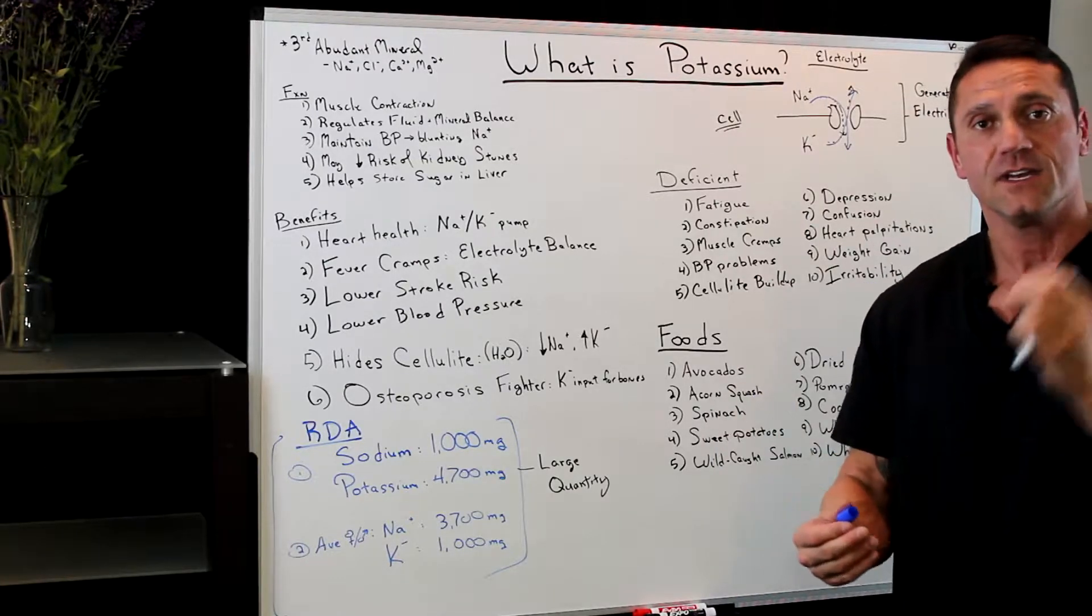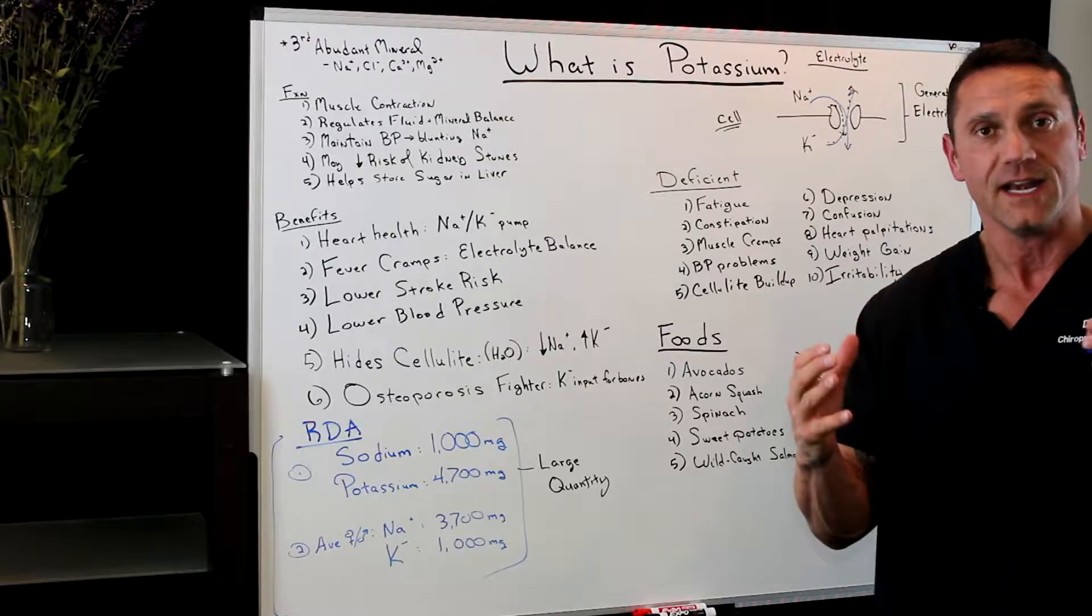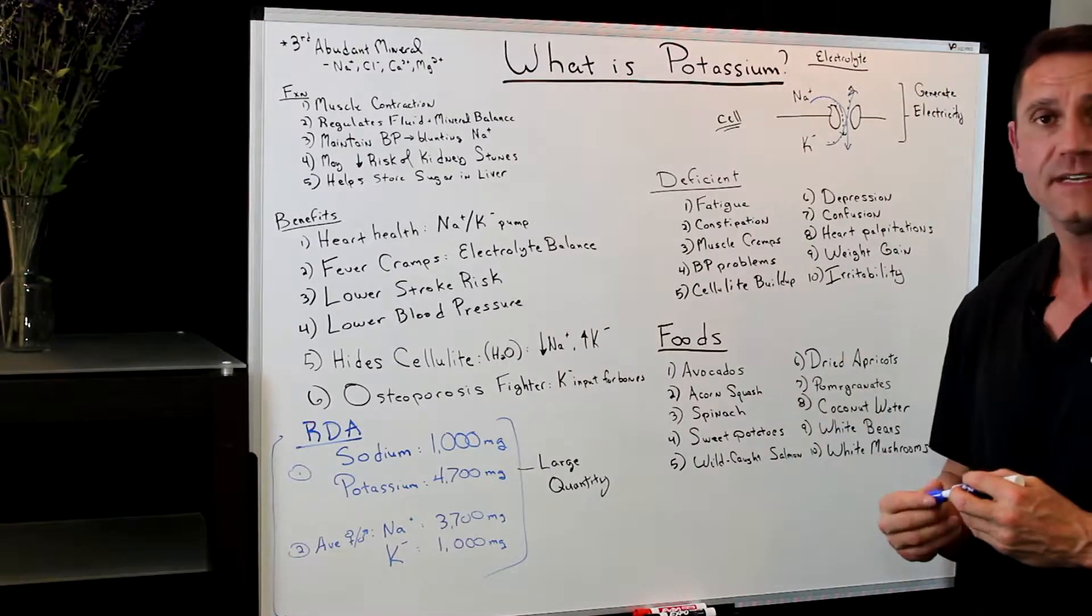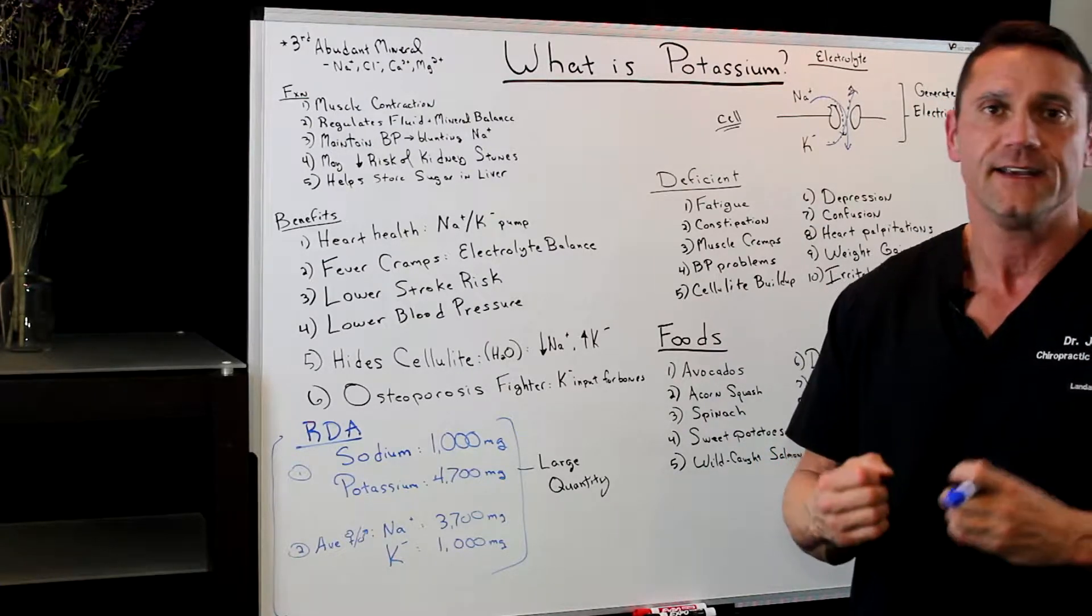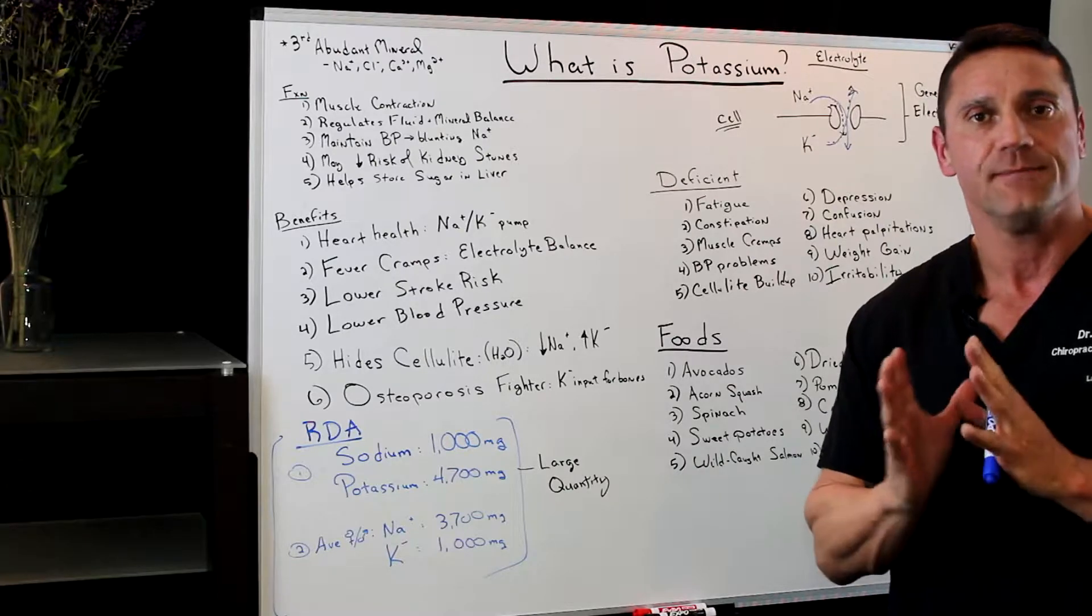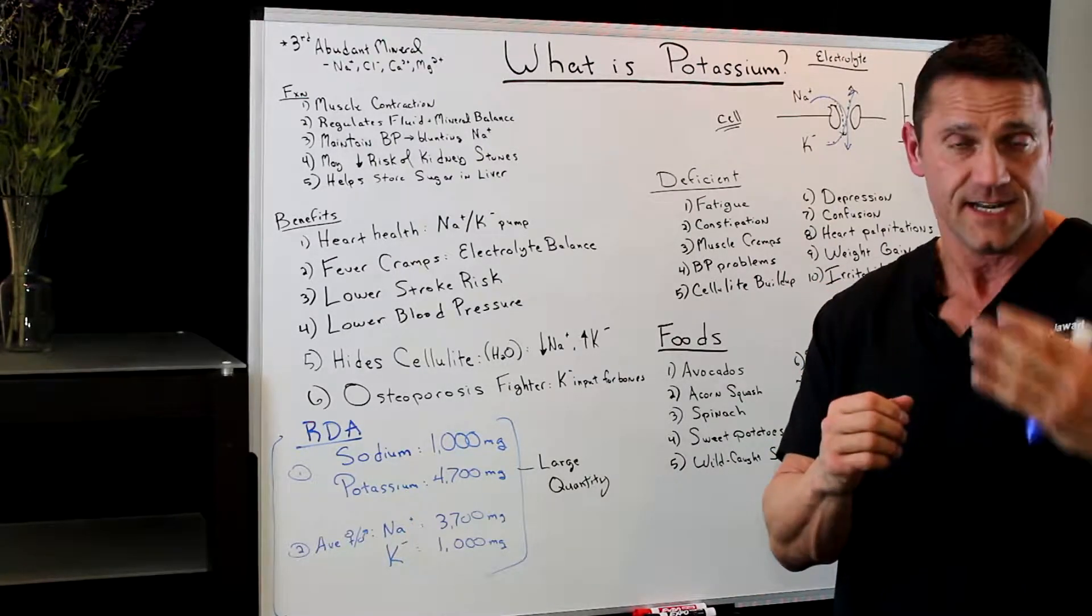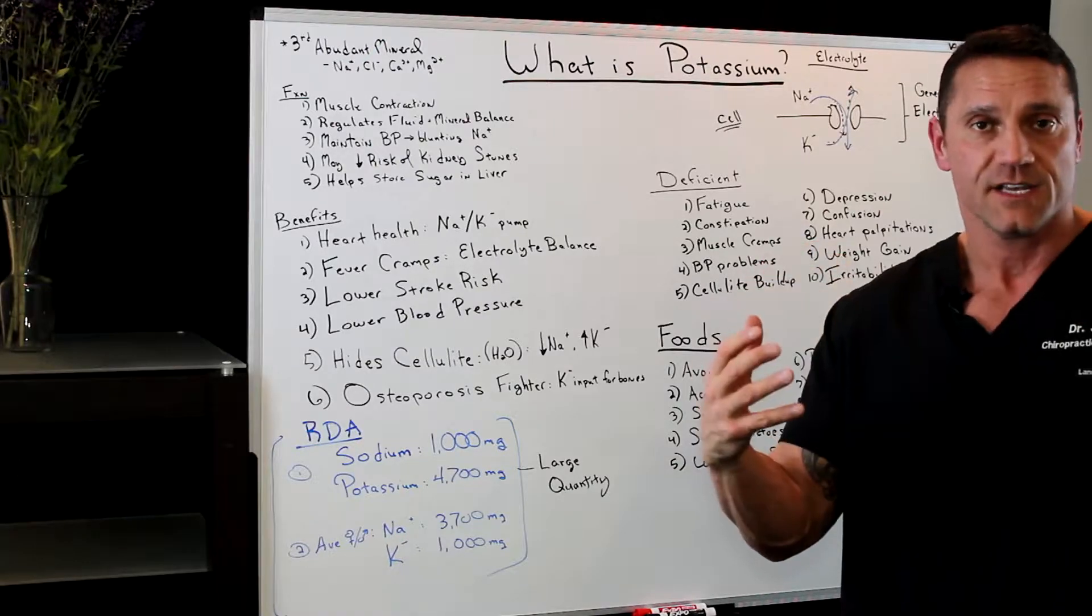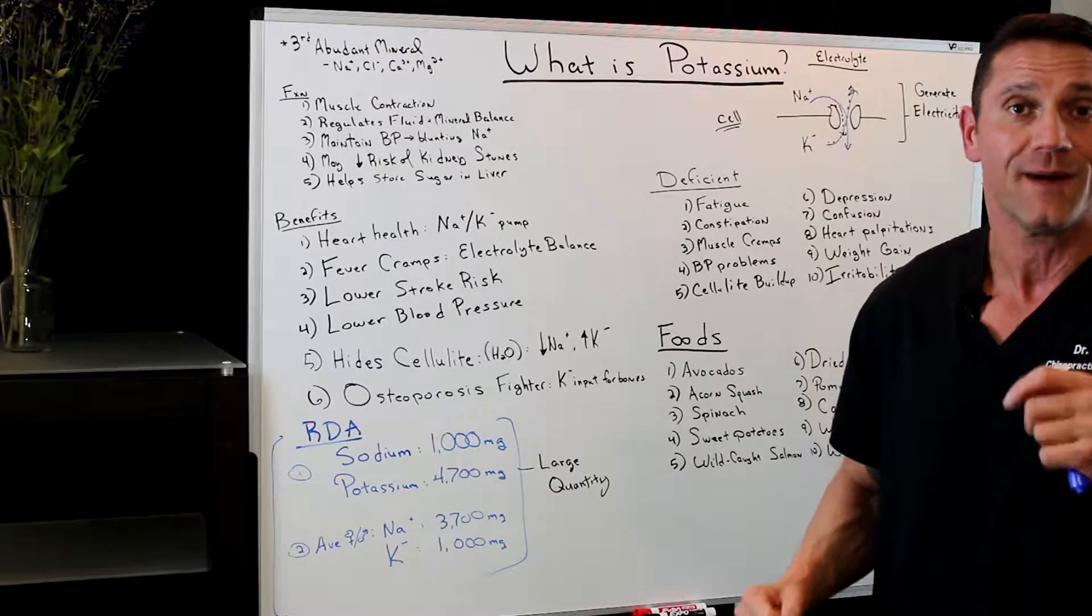Those are electrolytes, so what they do is they help generate electricity throughout our body. Now, potassium is very important. It is the third abundant mineral in our body. Minerals like sodium, chloride, calcium, magnesium, those are abundant minerals that our bodies need for normal cellular function. And potassium is the third most abundant mineral that our body needs.